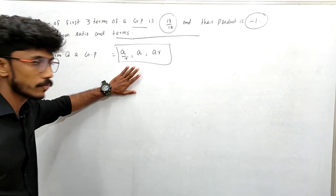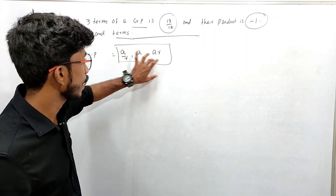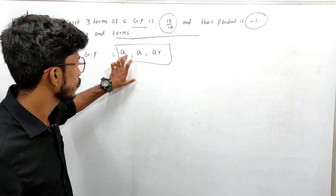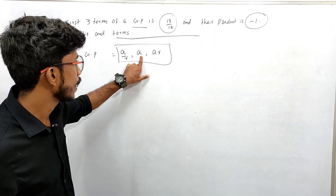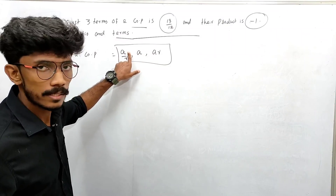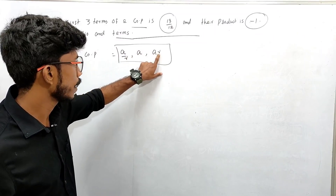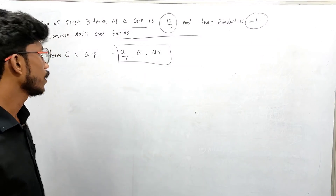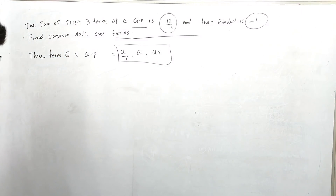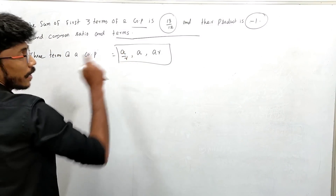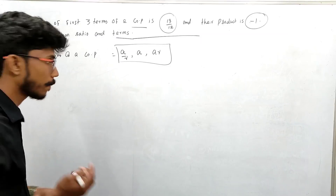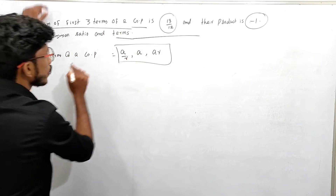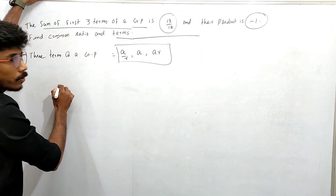So the 3 terms of the GP are A/R, A, AR. If you read the 3 terms: A/R, A, AR — the common ratio is R. The first term is A/R, then A. You will know that the sum of the 3 terms is 13 by 12.